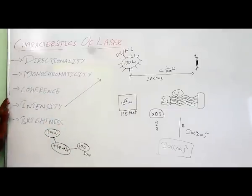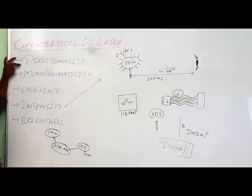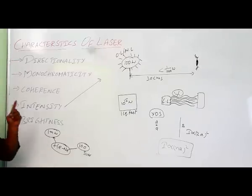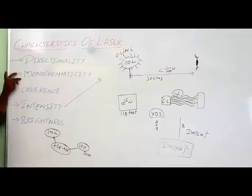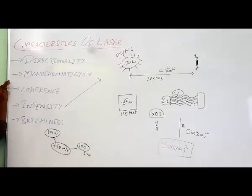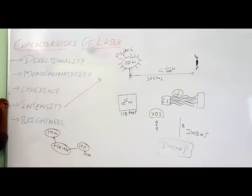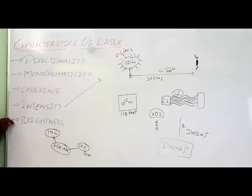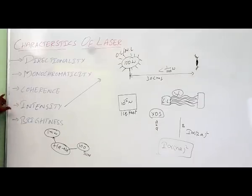In summary, laser light has good directionality — emitting in one direction unlike ordinary light which diverges in all directions. It has monochromaticity because transitions occur between two fixed energy levels. Coherence allows comparison of amplitude and phase at the same or neighboring points. High intensity results from its directionality property, and high brightness results from both high directionality and high intensity. These are the key characteristics of laser light compared to ordinary and monochromatic light.